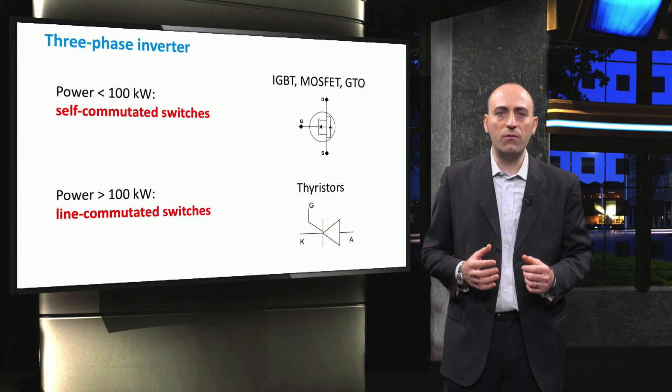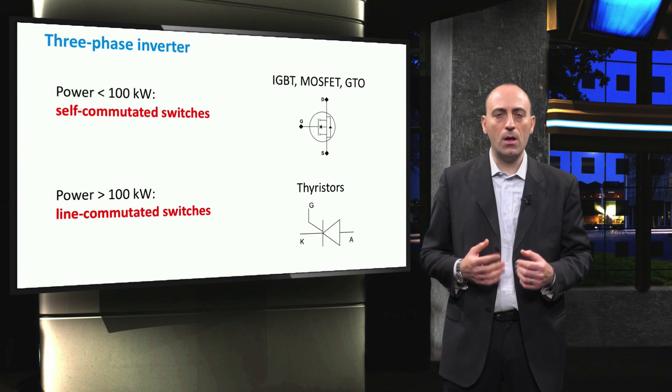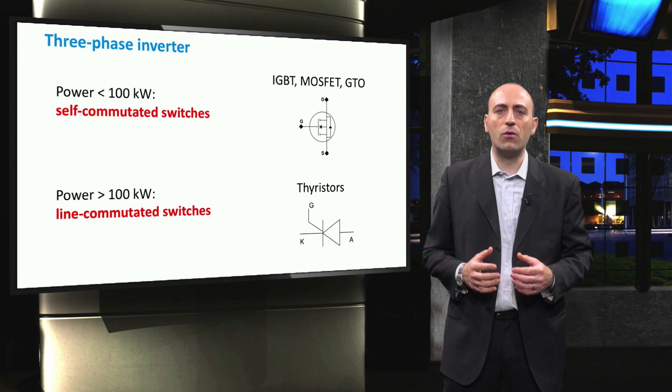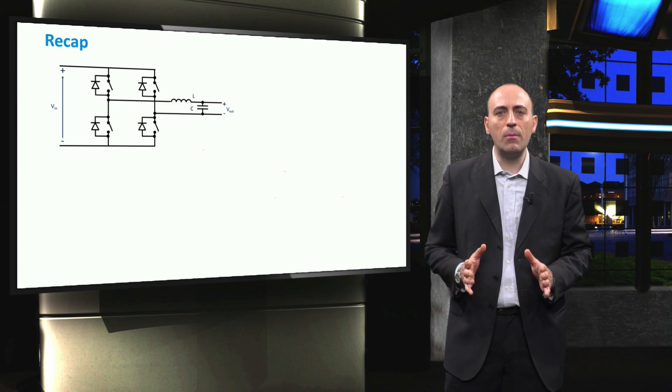Unlike self-commutated devices, Thyristors need an input signal, usually retrieved from the grid, to start conducting. This option is typically employed for high-voltage DC and high-voltage AC applications.